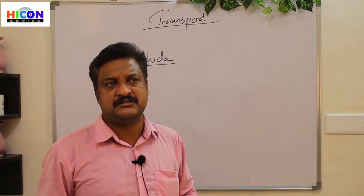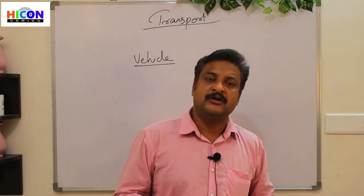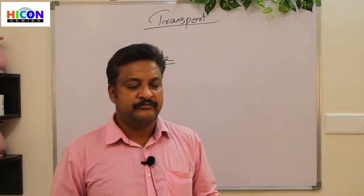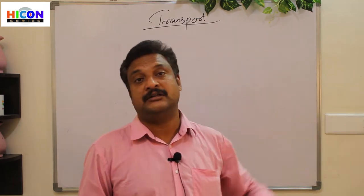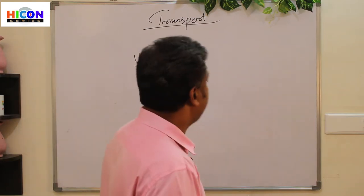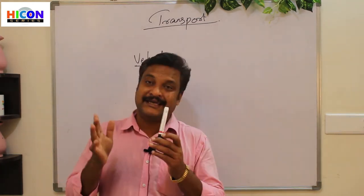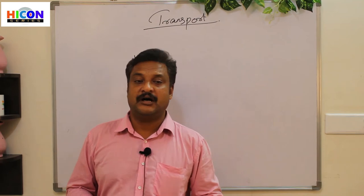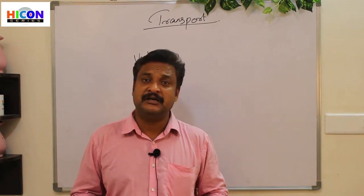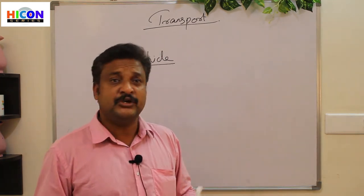Things like a car or a bus or other kinds which can carry us from one place to another are called vehicles. A vehicle is something like a car, bus, etc., which can carry us from one place to the other. We use a large number of vehicles to go from one place to another.